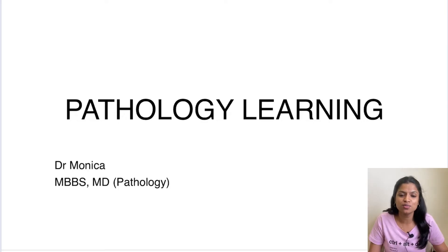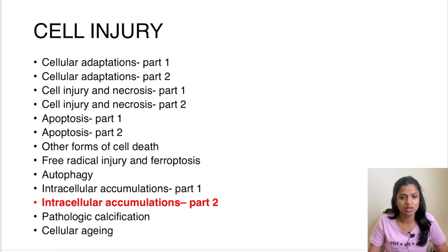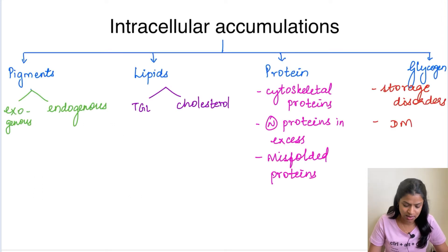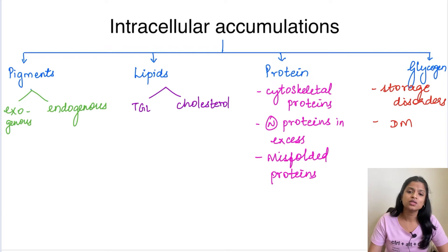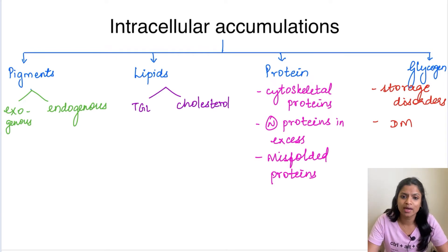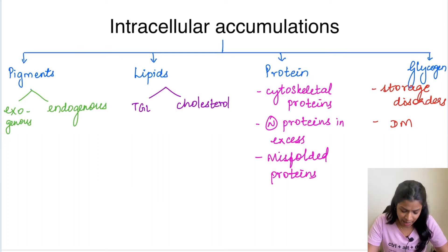Hello everyone, welcome to my YouTube channel Pathology Learning. I am Dr. Monica. In today's class we will be seeing about the second part of intracellular accumulations under the cell injury series. We had already seen about pigments under intracellular accumulations. Today we will be seeing about lipid, protein and glycogen accumulations. Whenever these substances get accumulated they will in turn lead to cell injury. First we will see about lipids.